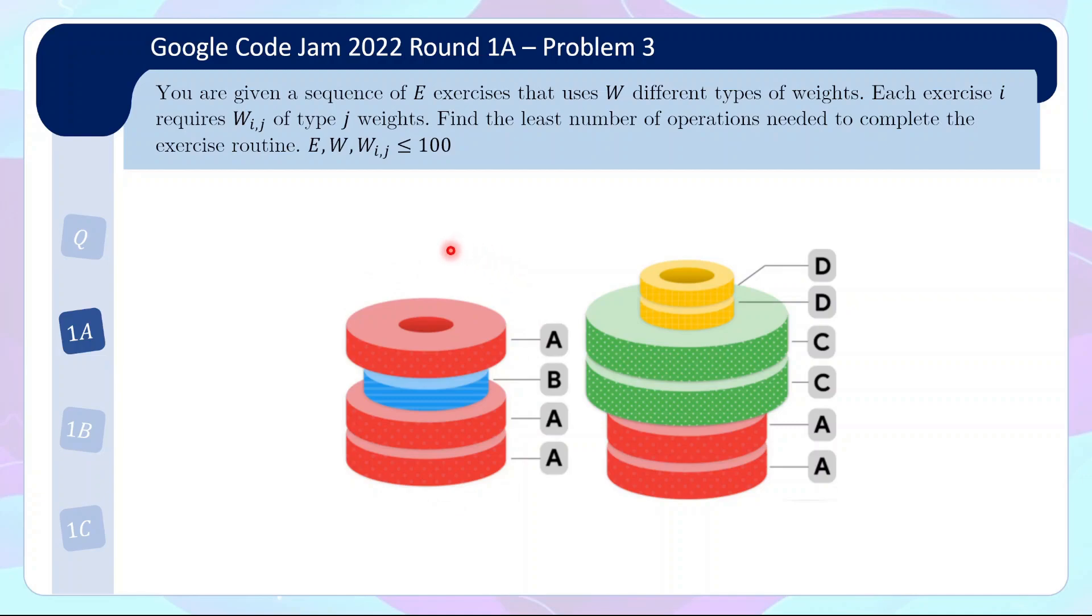And so in moving from one exercise to the next we will need to adjust the stack so that we get the correct number of weights. An operation is defined as taking off a weight and an operation is also defined as putting on a certain weight. And obviously we want to arrange our stacks in a clever way so that we don't have to take off too many weights and put on too many weights.